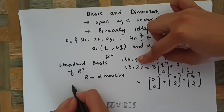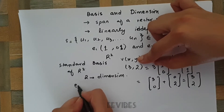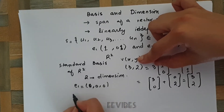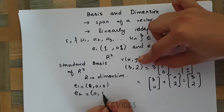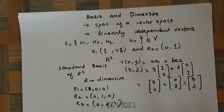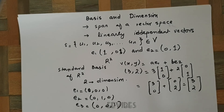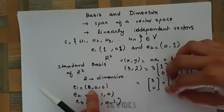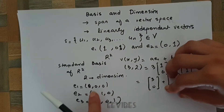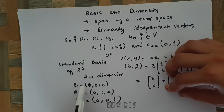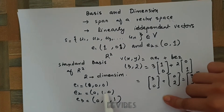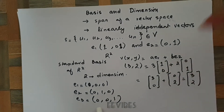Similarly, the standard basis for R³ will be: e1 = (1, 0, 0), e2 = (0, 1, 0), and e3 = (0, 0, 1). These are called the standard basis because if you want to generate any vector having three components, the x-component is the multiple of e1, the y-component is the multiple of e2, and the z-component is the multiple of e3.